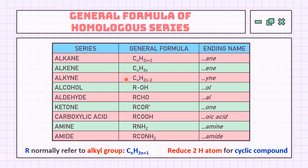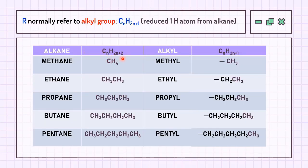Alkane forms a series with a general formula of CnH(2n+2). Starting from methane, with 1 carbon and 4 hydrogens, by adding CH2 to it, it becomes C2H6, known as ethane — the next homolog of this series. If we add another CH2, it gives propane, C3H8. And the list goes on for butane and pentane. Since alkane is the backbone of any organic compound, if it becomes a substituent, one hydrogen must be removed so it can form a bond to the carbon backbone. Alkane as a substituent is known as an alkyl group, with one less hydrogen in its general formula. Hence, methane becomes methyl, ethane becomes ethyl, and propane becomes propyl.